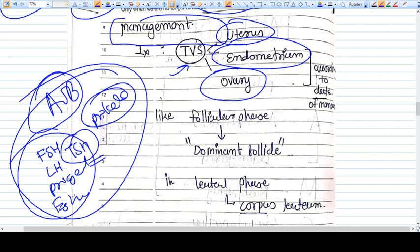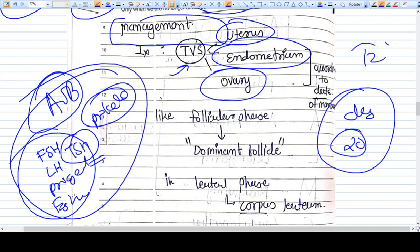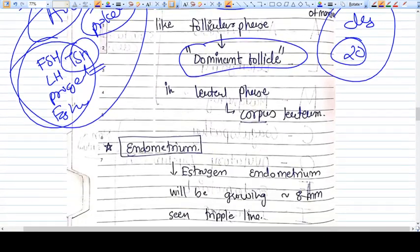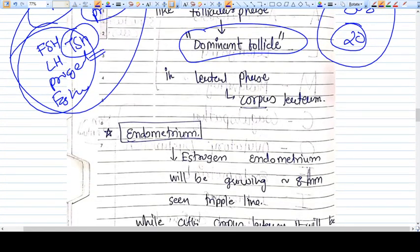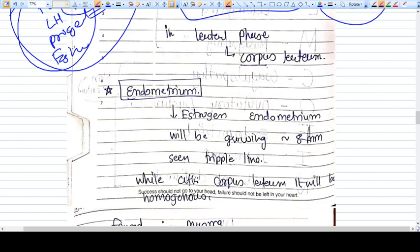For example, you are doing a transvaginal scan and the patient comes on day 20 of the menstruation cycle. At day 20, the patient should have been in the luteal phase, and in the luteal phase you must find a corpus luteum in the ovary. If the patient comes on day 12, it is the follicular phase, and you can find a dominant follicle in the ovary. If on day 12 you don't find the dominant follicle, that means some problem is there.